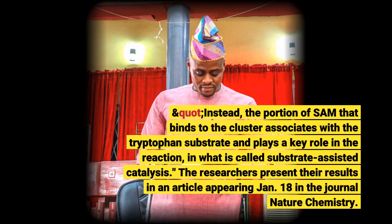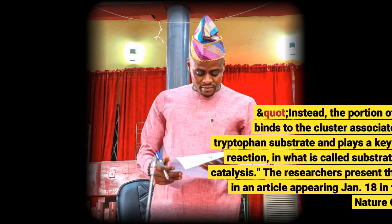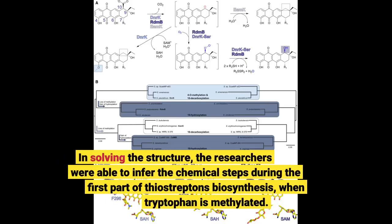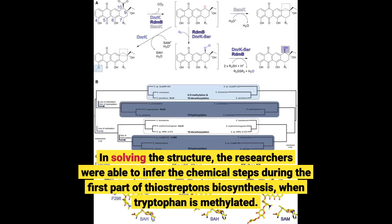The researchers present their results in an article appearing January 18 in the journal Nature Chemistry. In solving the structure, the researchers were able to infer the chemical steps during the first part of thiostrepton's biosynthesis, when tryptophan is methylated.